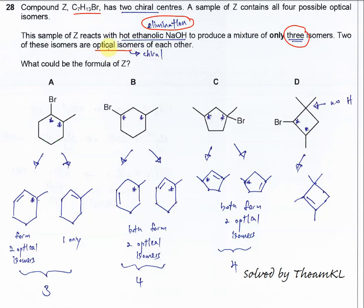For option A, elimination can happen from this bromine and this hydrogen — these two will be removed, forming a double bond. It forms this product, and this product has one chiral center.